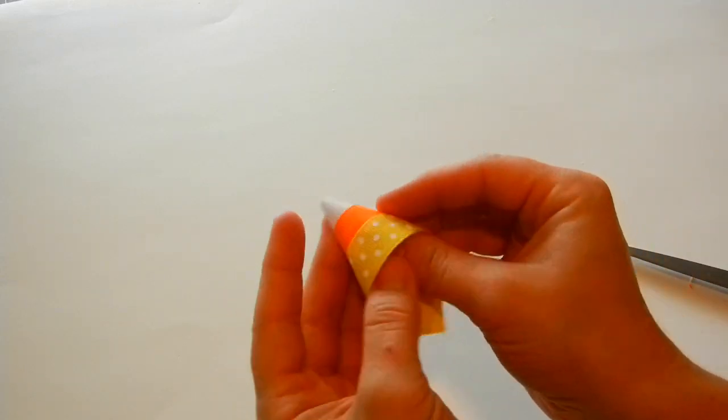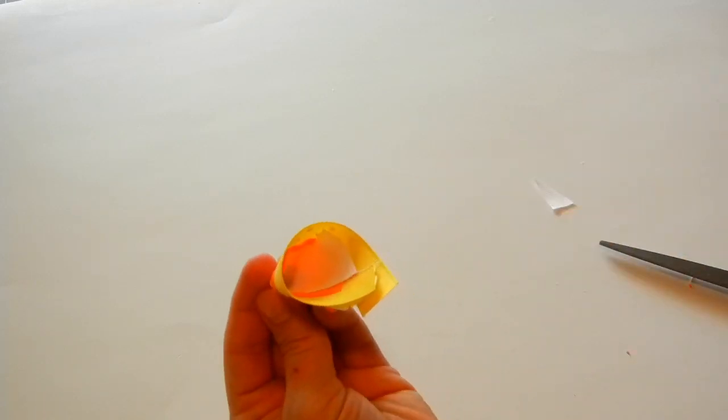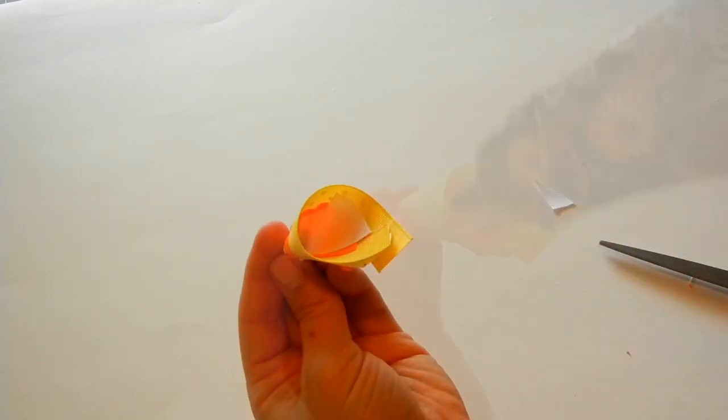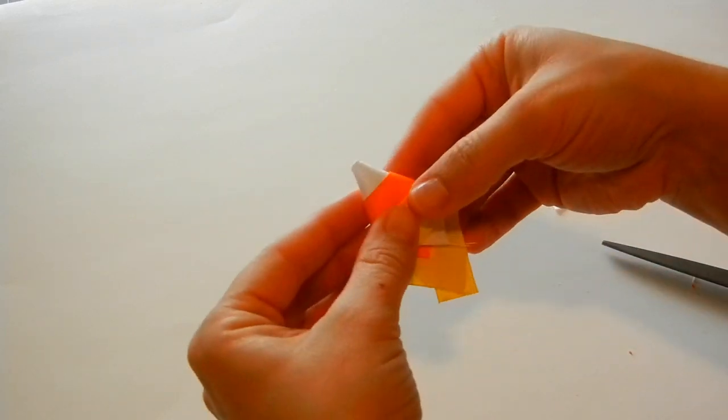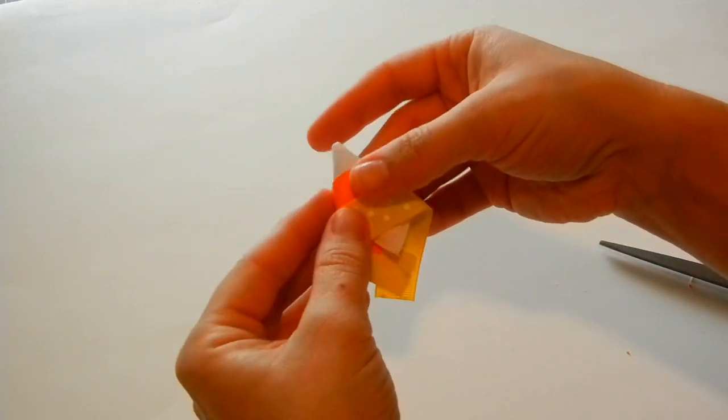And then now I'm just going to fill the inside a little bit with hot glue, and then we're going to bring it together. You just need a tiny dab and then bring it down.